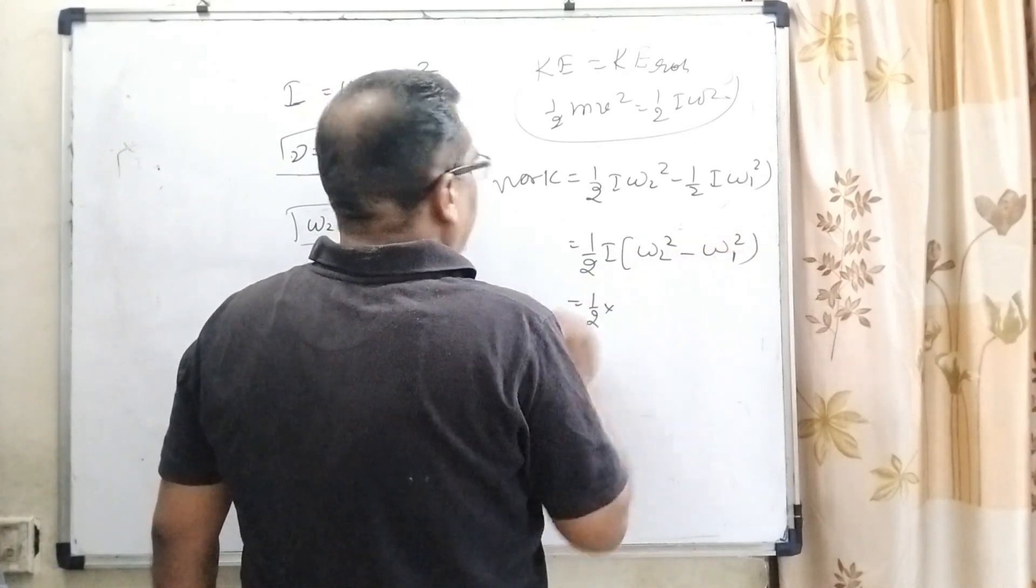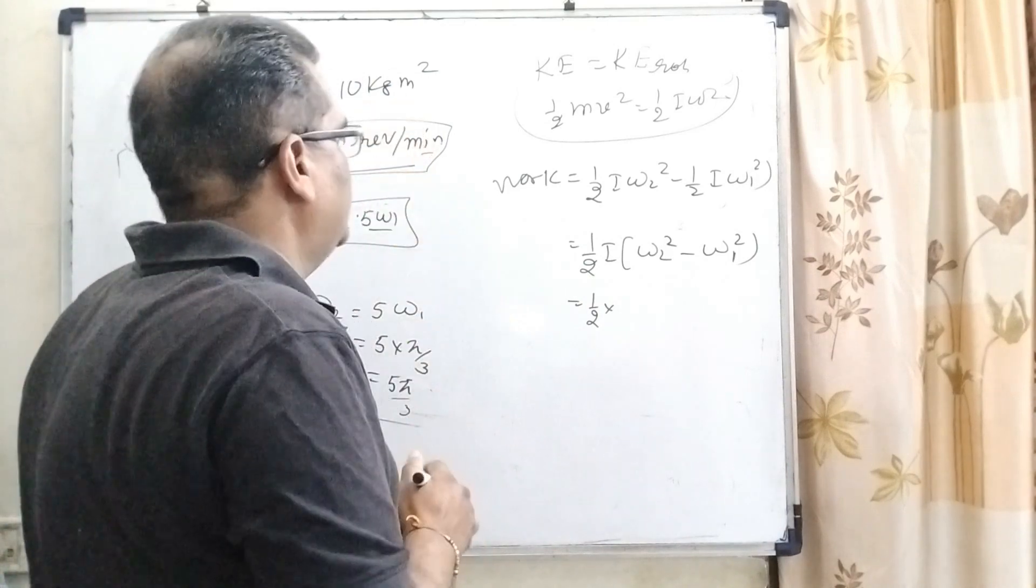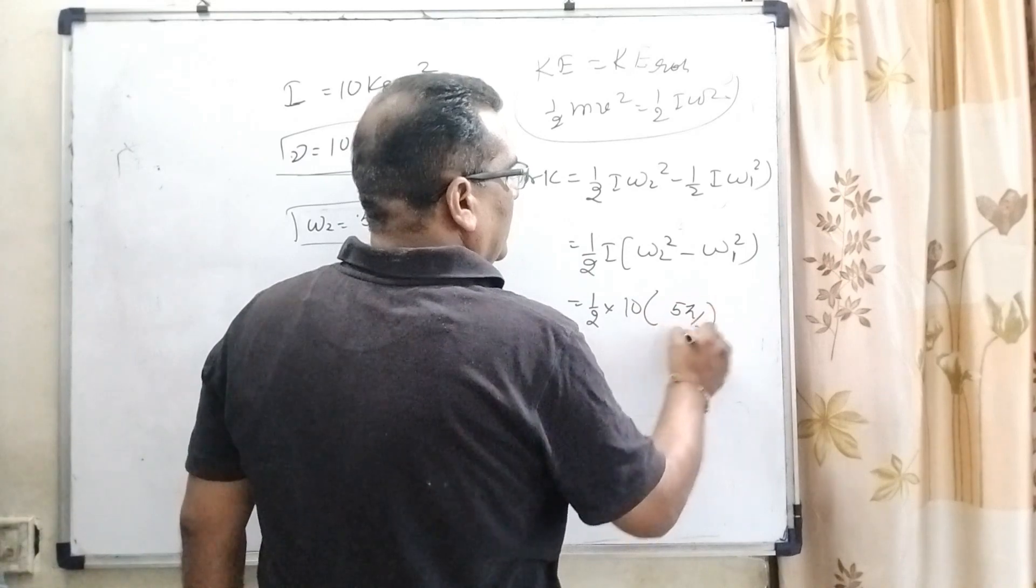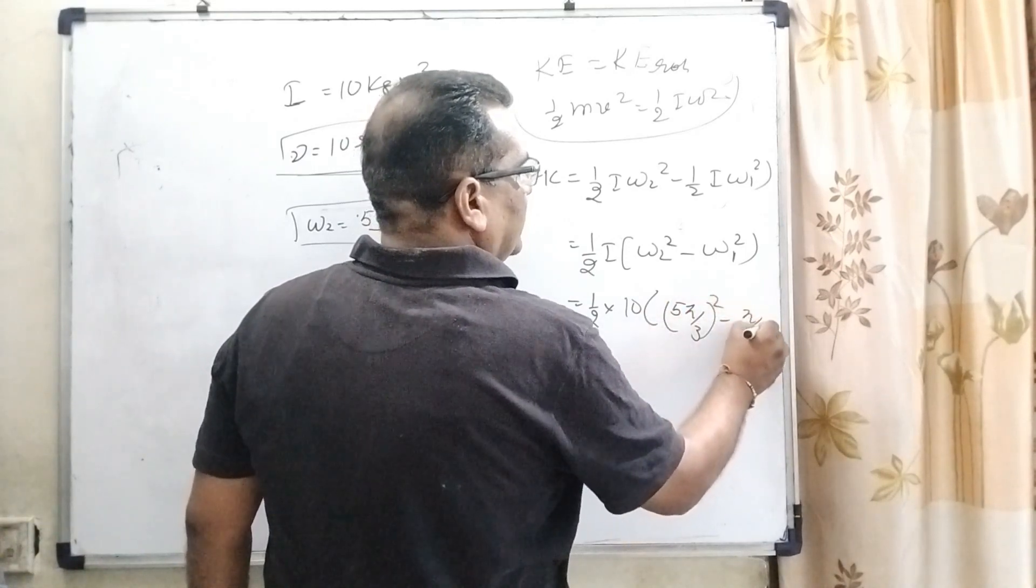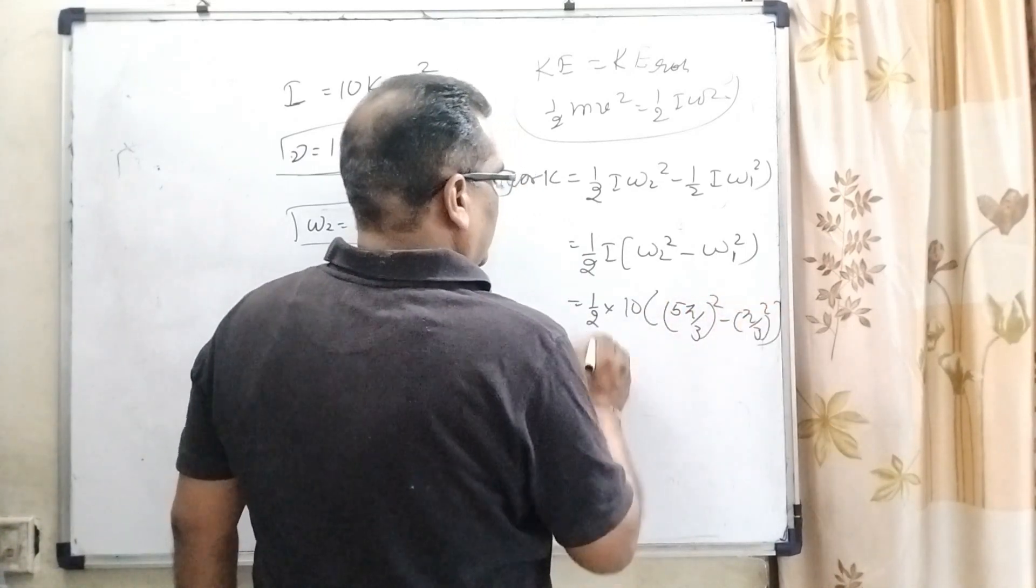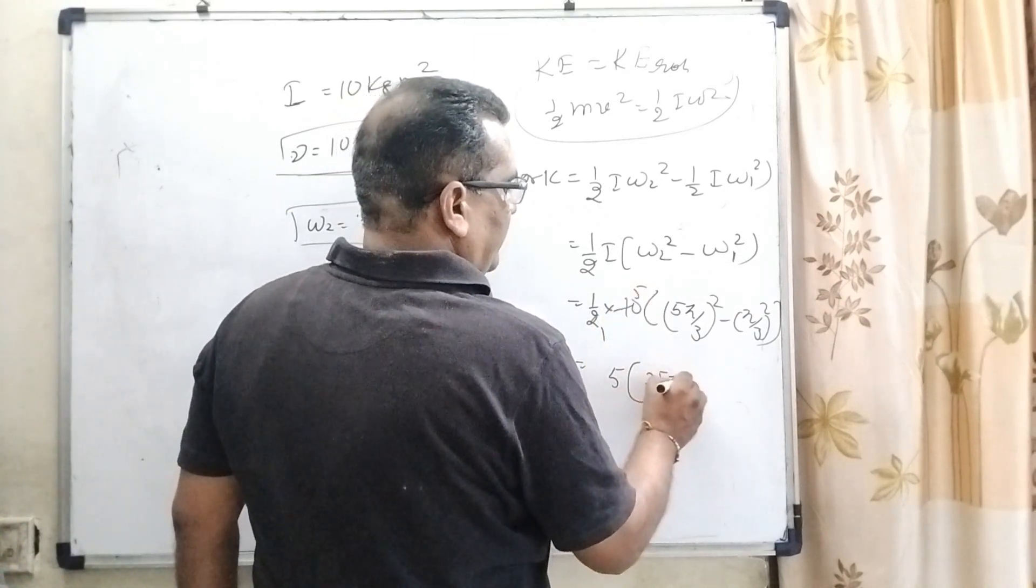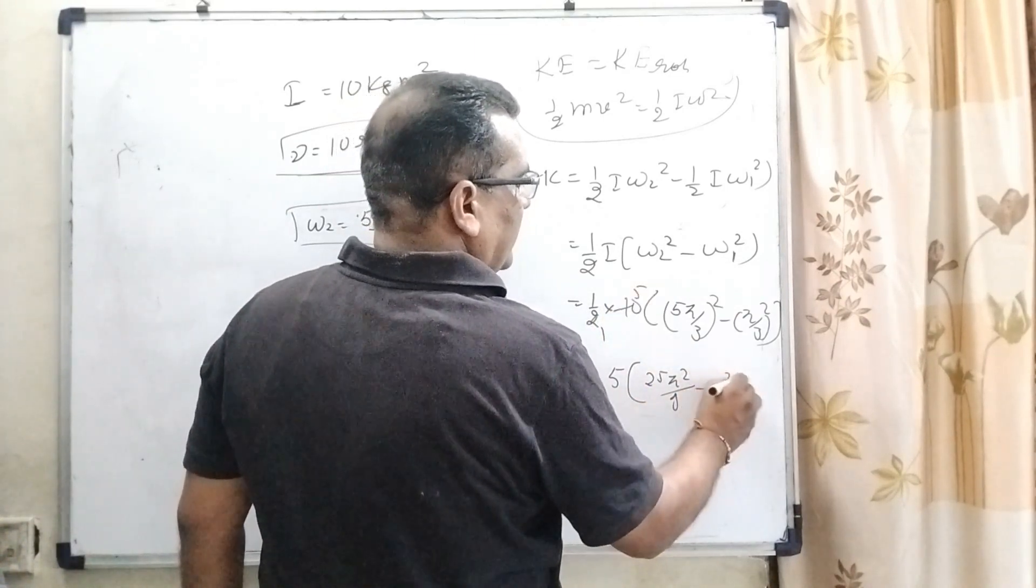What is the value of i? The moment of inertia that is given 10 and omega 2 is 5 pi by 3 whole square, omega 1 is pi by 3 whole square. So, 1 by 2 into 10 is 5 and 25 pi square by 9 minus pi square by 9.